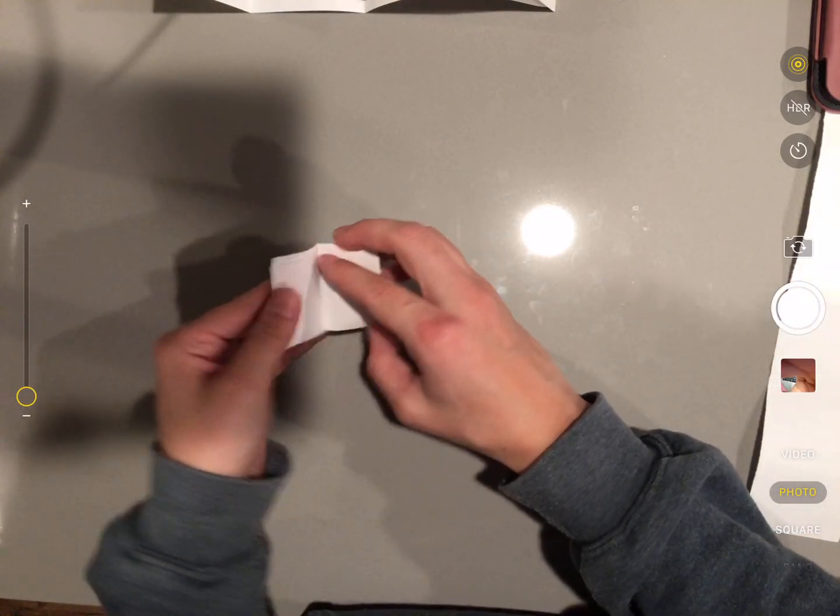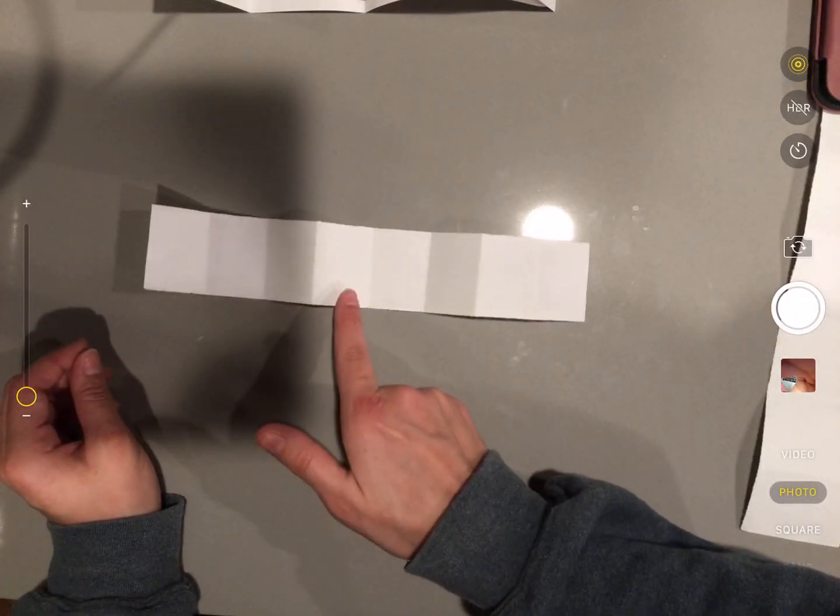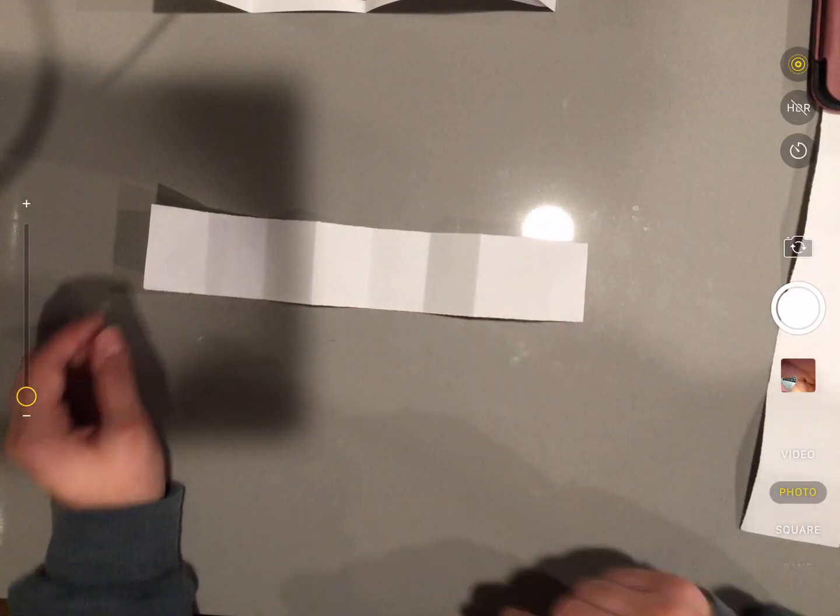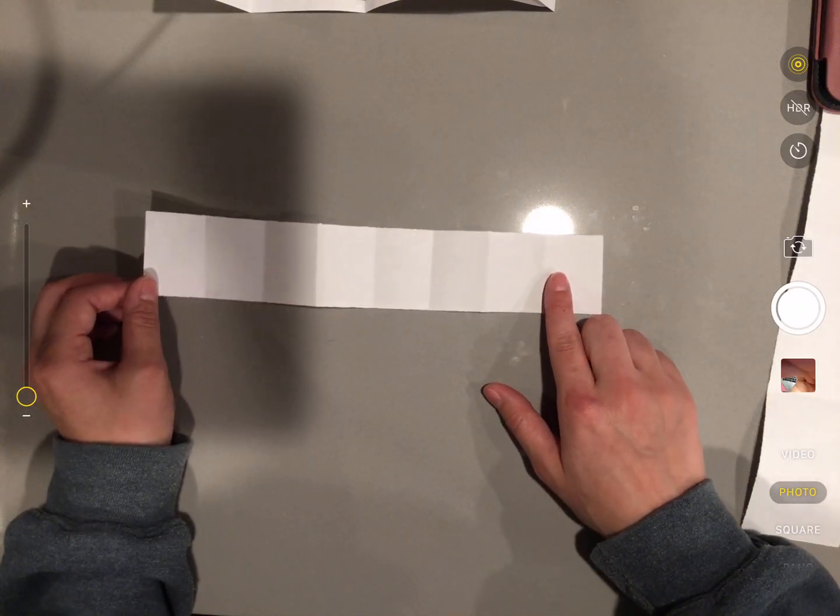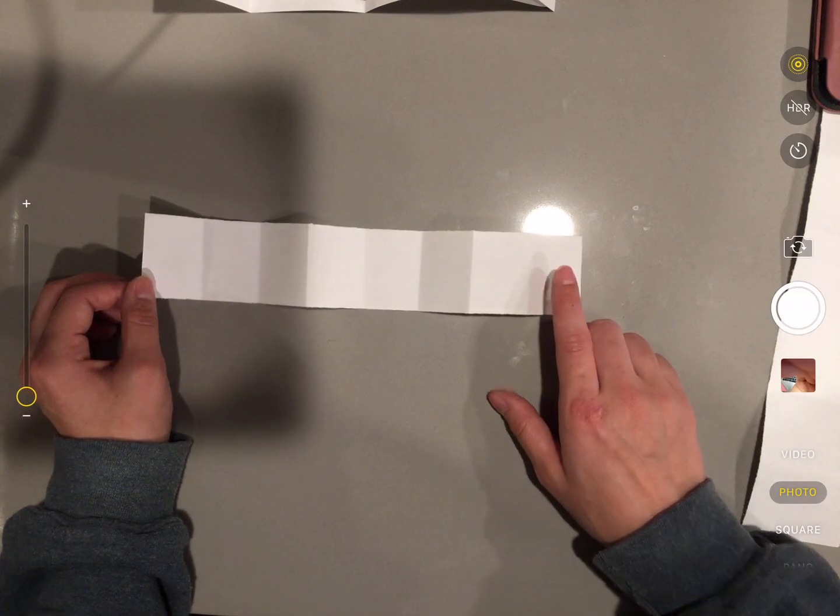Let's unfold it and find out. One, two, three, four, five, six, seven, eight. So I have eight equal parts. Good job.